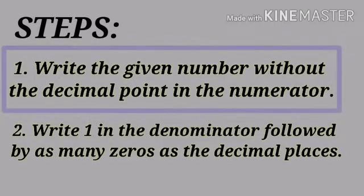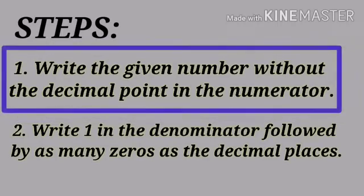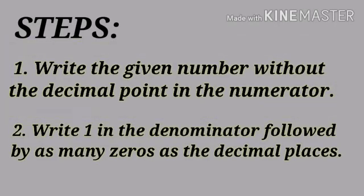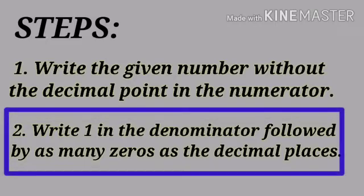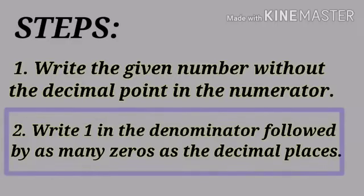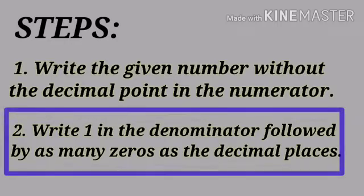The first step is: write the given number without the decimal point in the numerator. The second step is: write one in the denominator followed by as many zeros as there are decimal places.